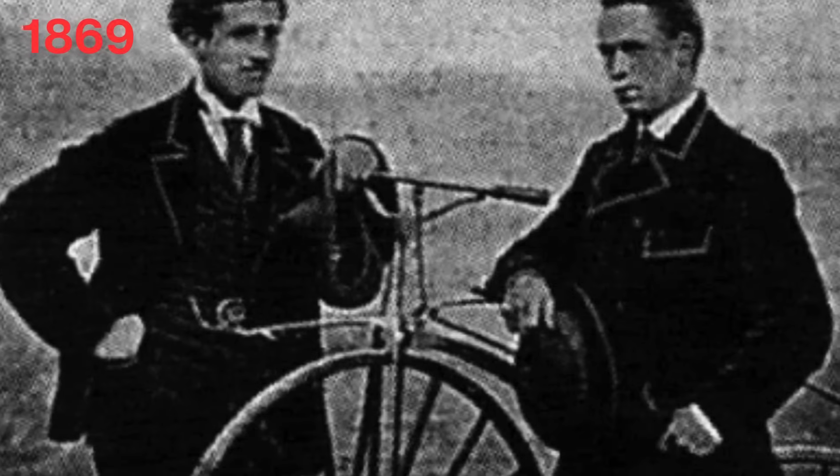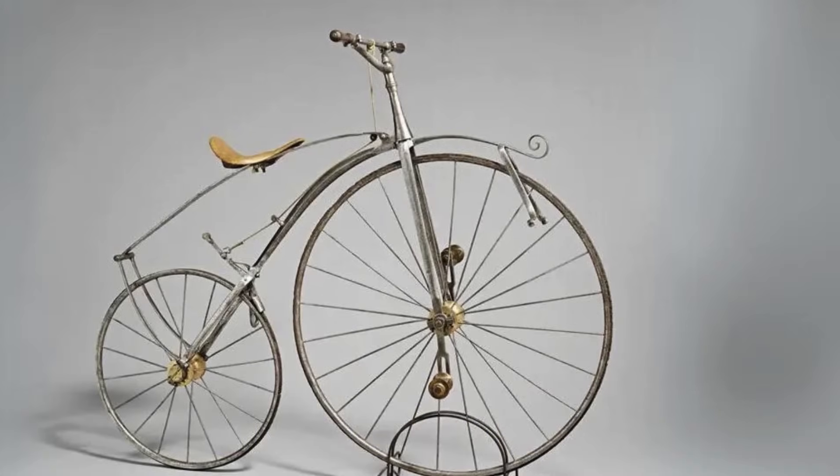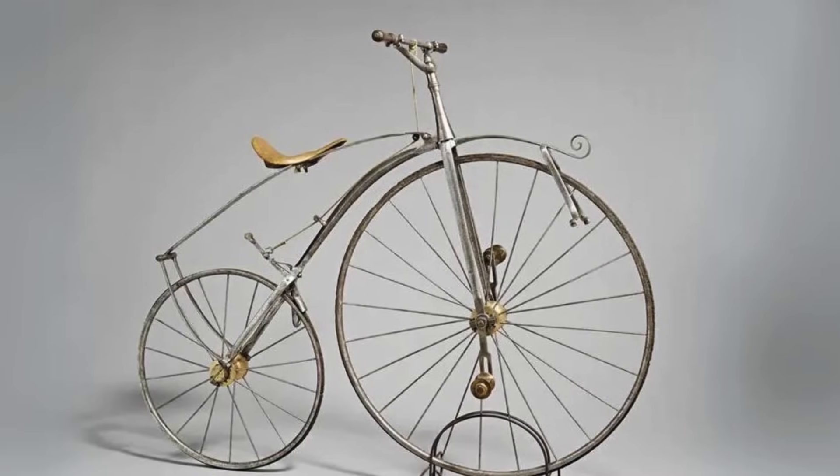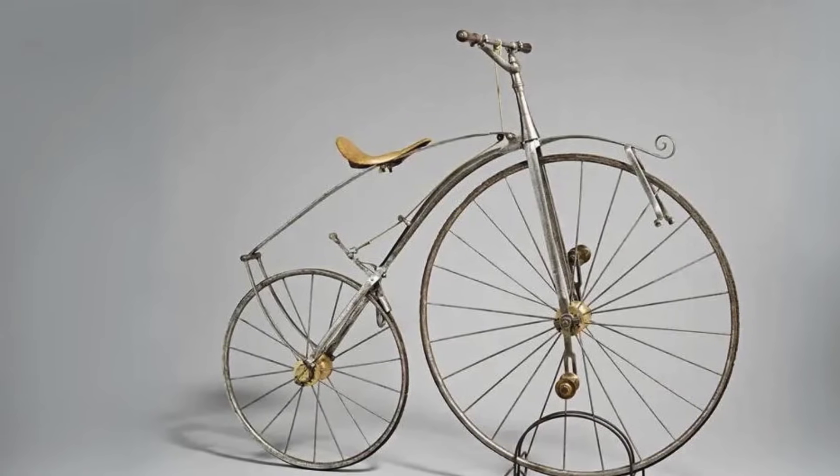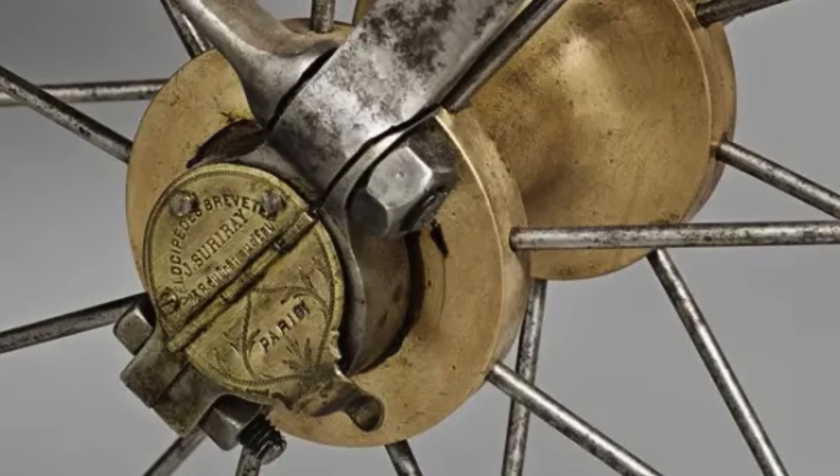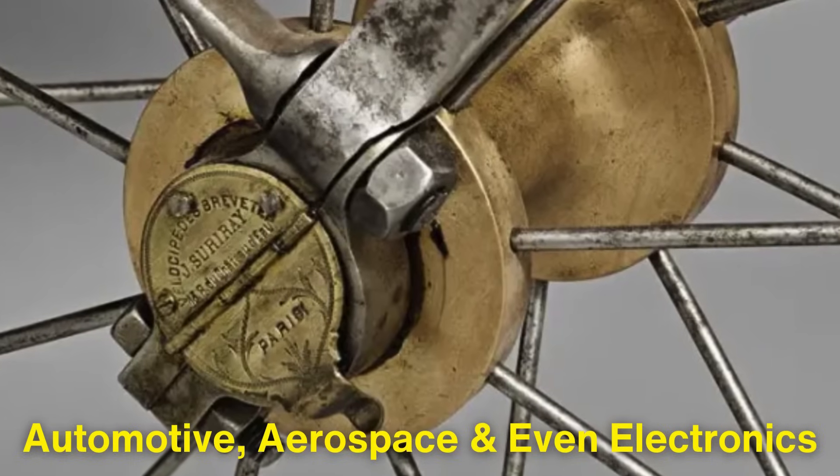Then in 1869, Jules Sureret, a French bicycle mechanic, invented ball bearings for bicycle wheels, enhancing the efficiency of early bicycles and setting the stage for the wider use of ball bearings in many types of machinery. These small components would eventually become crucial to industries like automotive, aerospace, and even electronics.